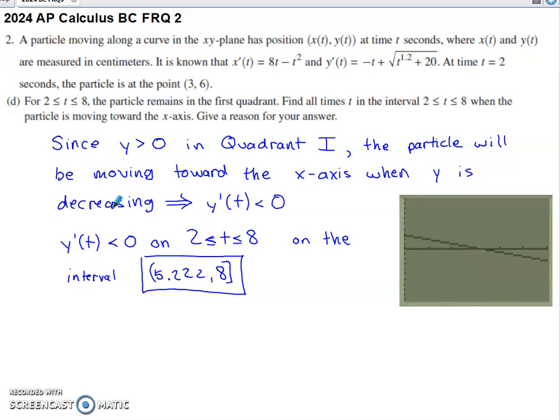If y were somehow negative, that's not the case for this part of the problem. But if y were negative, we would need to see y increasing to be moving toward the x-axis. Right. But for our case, because y is positive, when the y-coordinate is decreasing, the particle will be moving toward the x-axis.